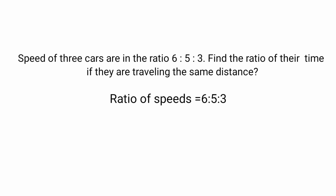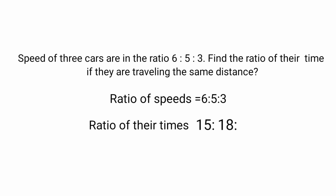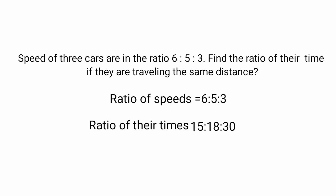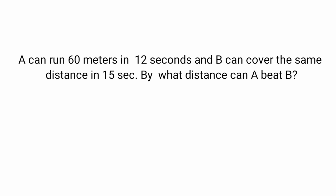The ratio of speeds of the 3 cars is 6:5:3 and we need to find the ratio of time for the same distance. Using the shortcut: for the first car's time, multiply the speeds of the other two cars — 5 × 3 = 15. For the second car, multiply the speeds of the first and third — 6 × 3 = 18. For the third car, multiply the speeds of the first and second — 6 × 5 = 30. This gives ratio 15:18:30, which simplifies to 5:6:10.